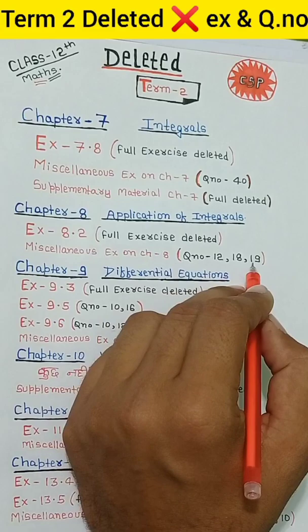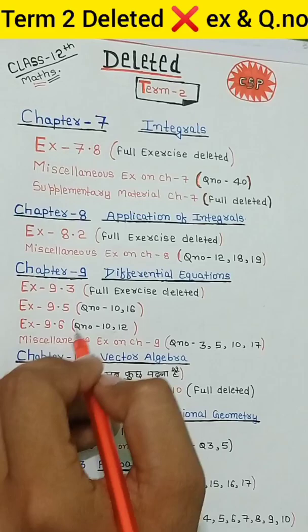Chapter 9, Differential Equations. Exercise 9.3, full exercise deleted. 9.5, question numbers 3 and 16 deleted. 9.6, question numbers 3 and 12 deleted. Miscellaneous exercise, questions 3, 5, and 17 deleted.